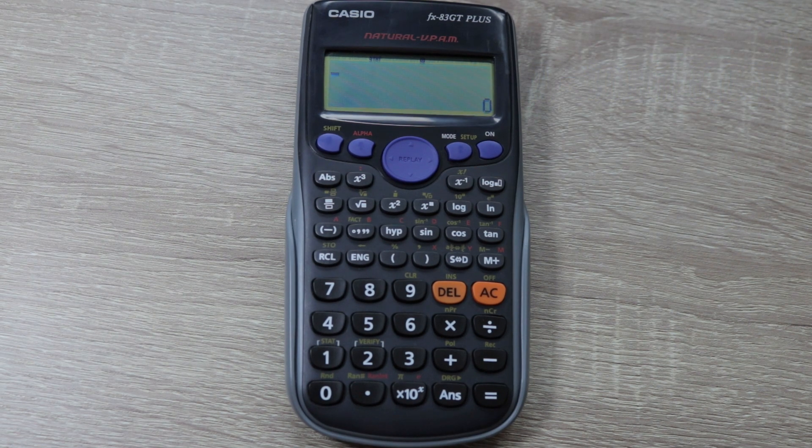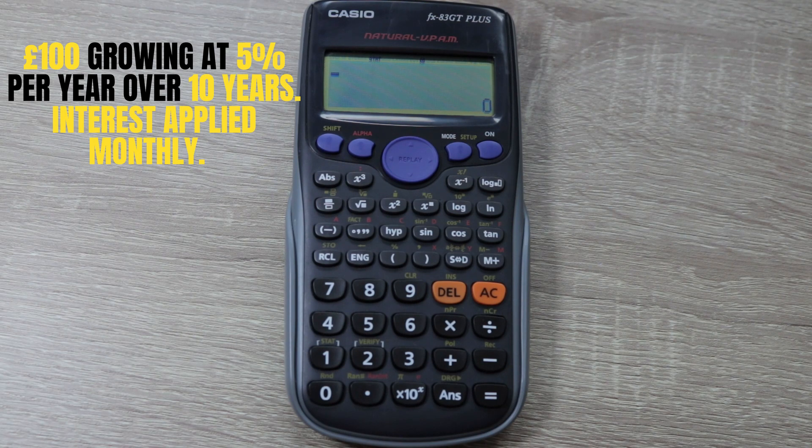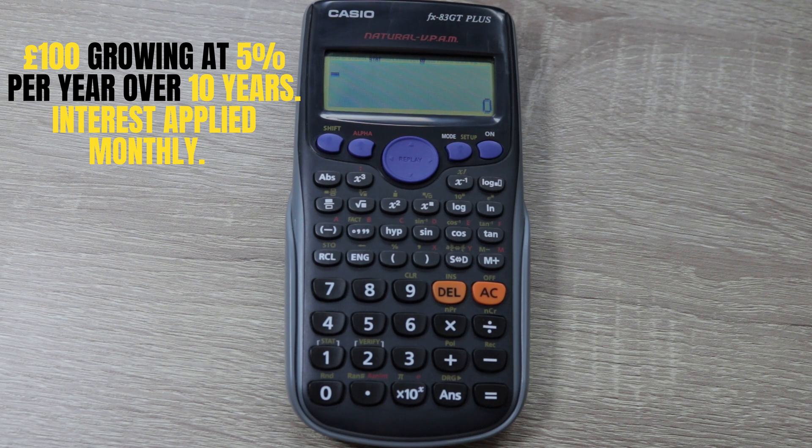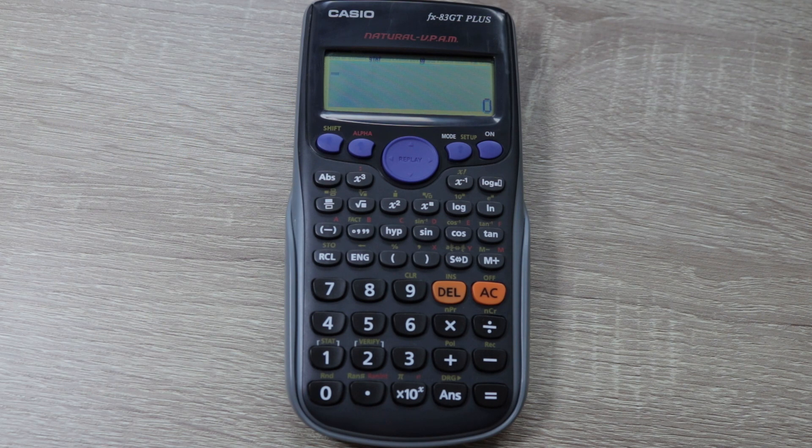In the next example we're going to change it so the interest is applied every single month. So it's still 5% per year, but the interest will be added on a monthly basis. You'll see the impact that has because we're not compounding at the end of the year - we're compounding it each month across the whole year.